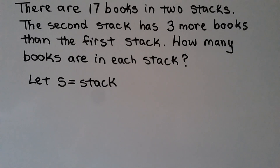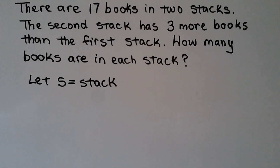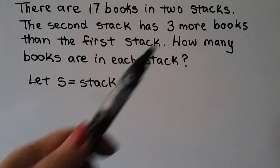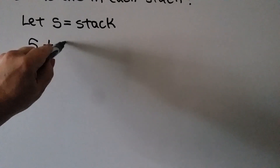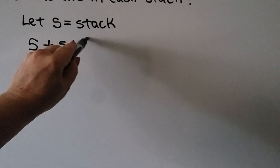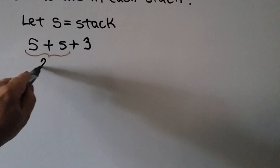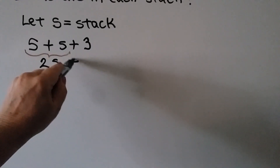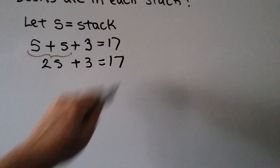There are 17 books in two stacks, and the second stack has three more books than the first stack. How many books are in each stack? So we're going to let s equal stack. We know there's 17 in all, one has three more. So we've got s for stack plus a stack with three more, so that's s plus three. We can group the two s's together to be two s. Now we have two s plus three, and we know there are 17 books, so the whole thing equals 17.